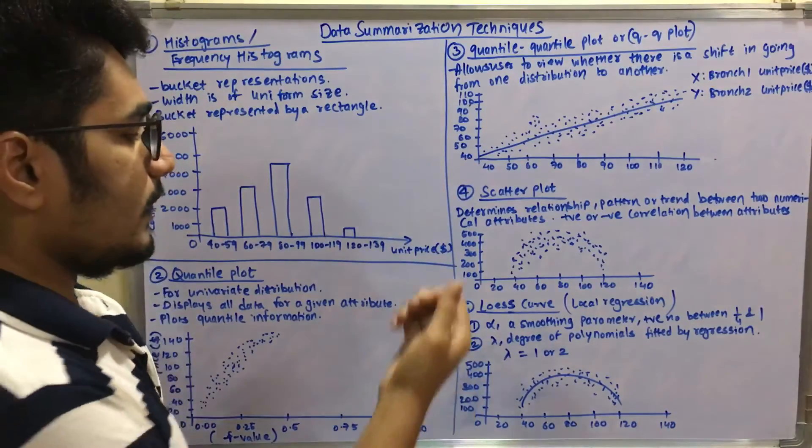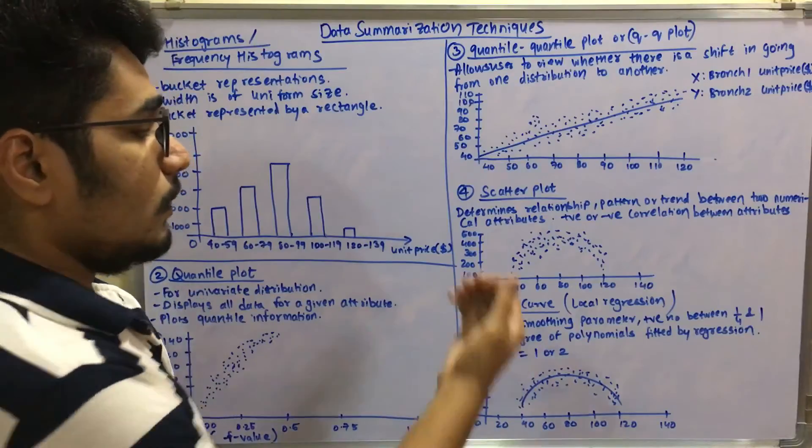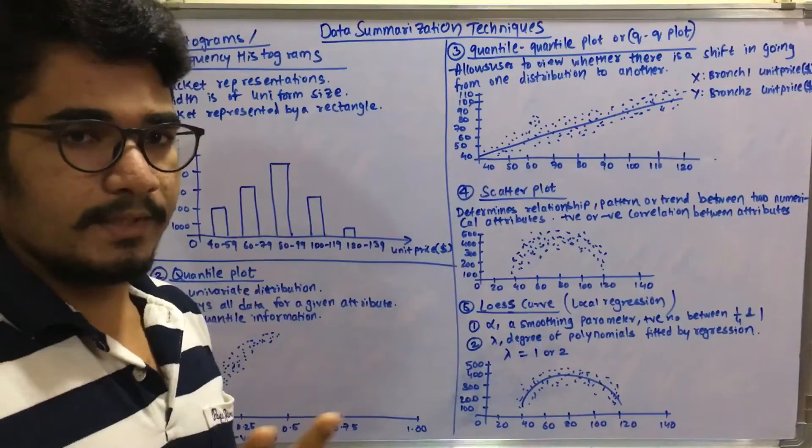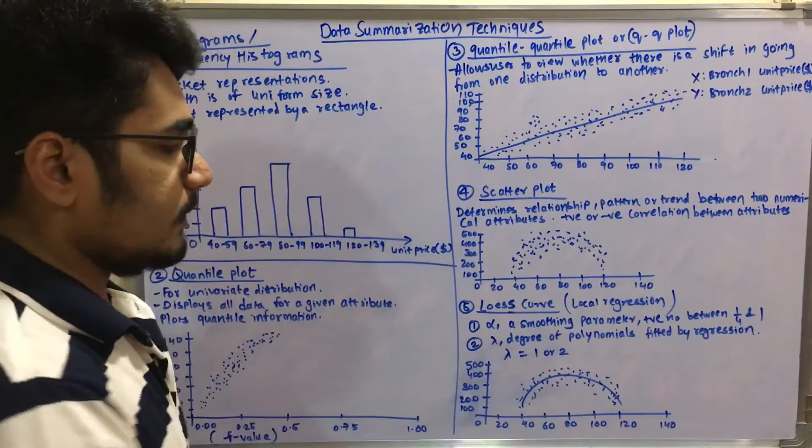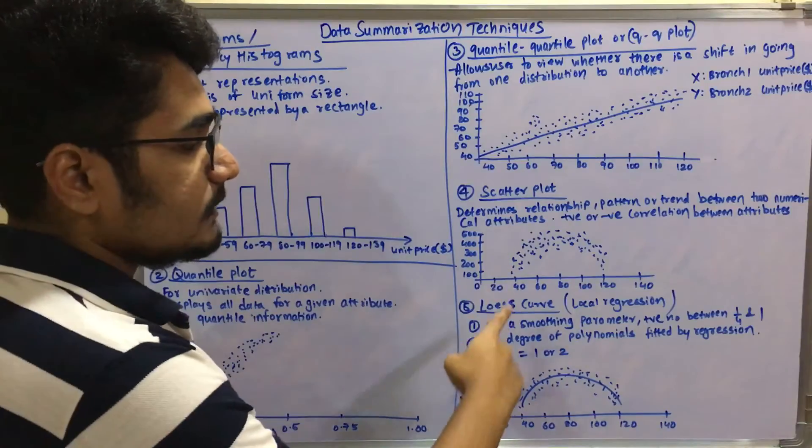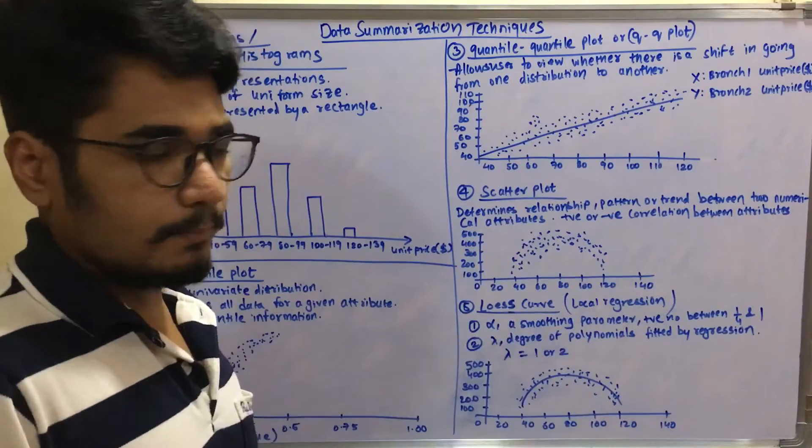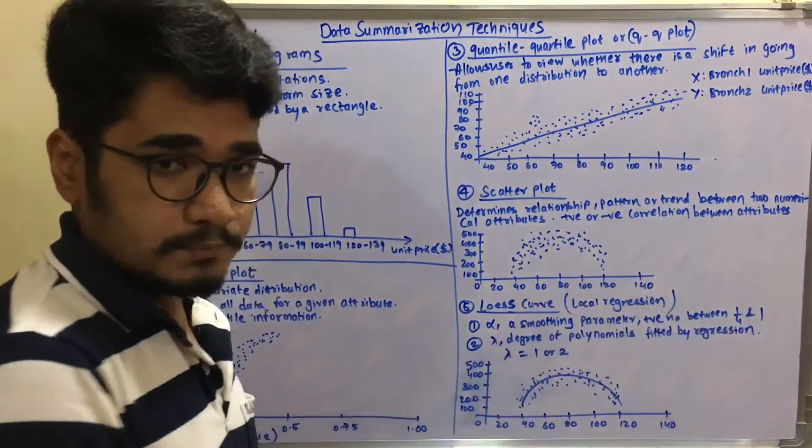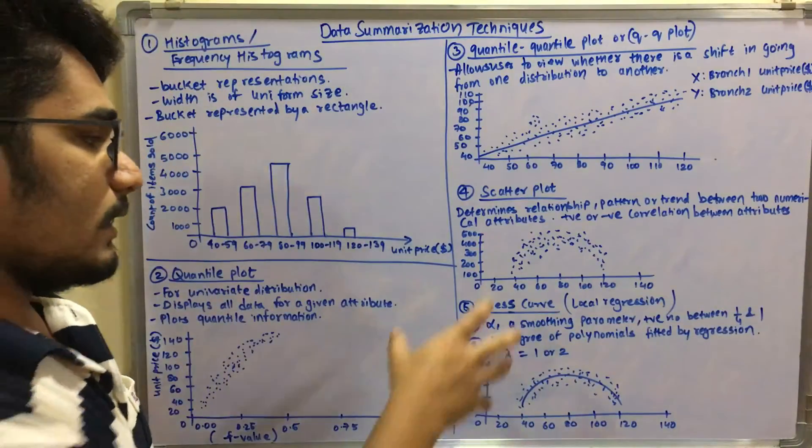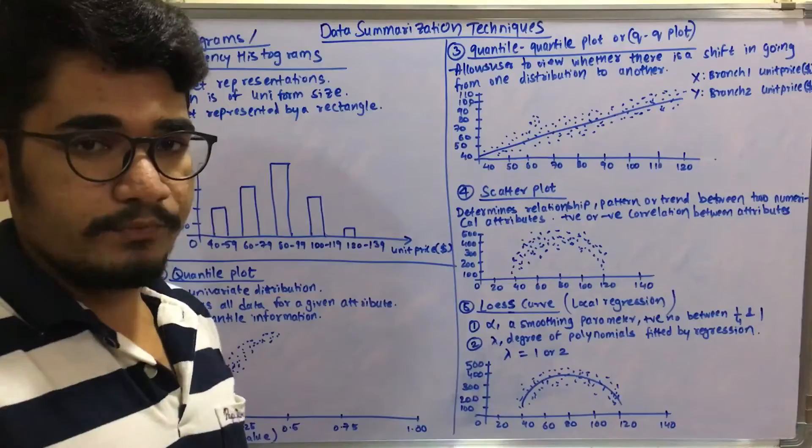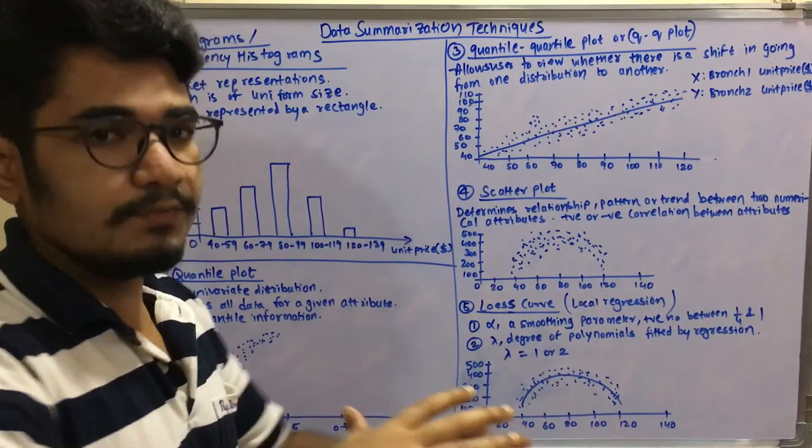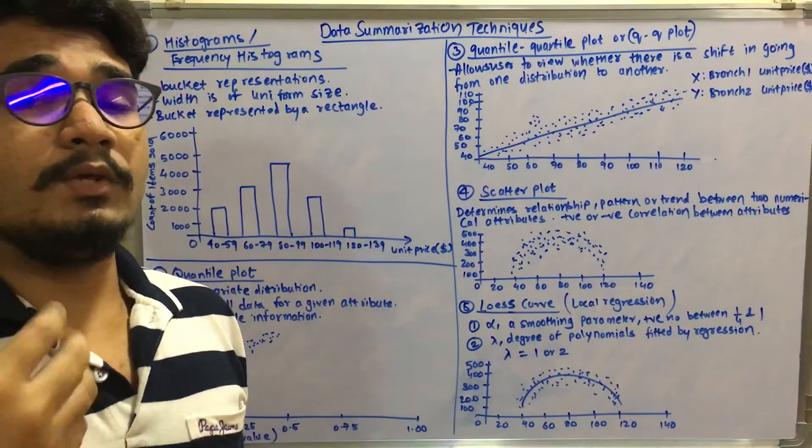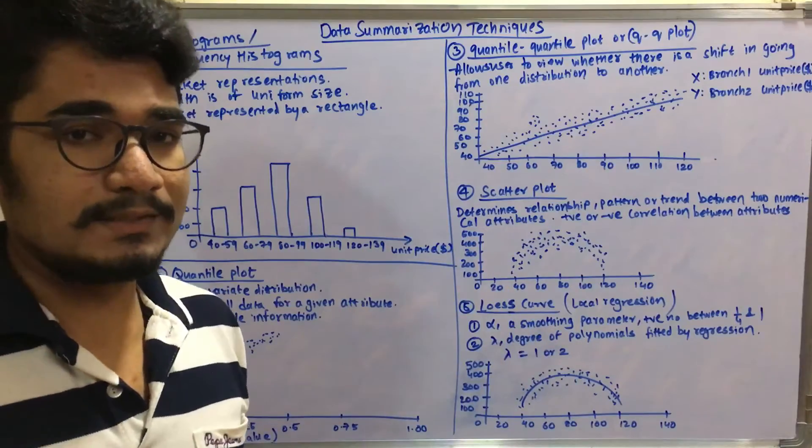Next we have the final depiction technique, that is the loess curve. Loess stands for local regression. And this curve is basically based on two parameters. So first one is alpha - alpha is a smoothing parameter and it is a positive number between having the ranges of value, it lies between one by four, that is 0.25, and one. And so if the value of this alpha increases, then that means that this curve is even more smoother. So if you want to make your curve or your distribution look even more smoother, you may have to increase the alpha value to a considerable level.